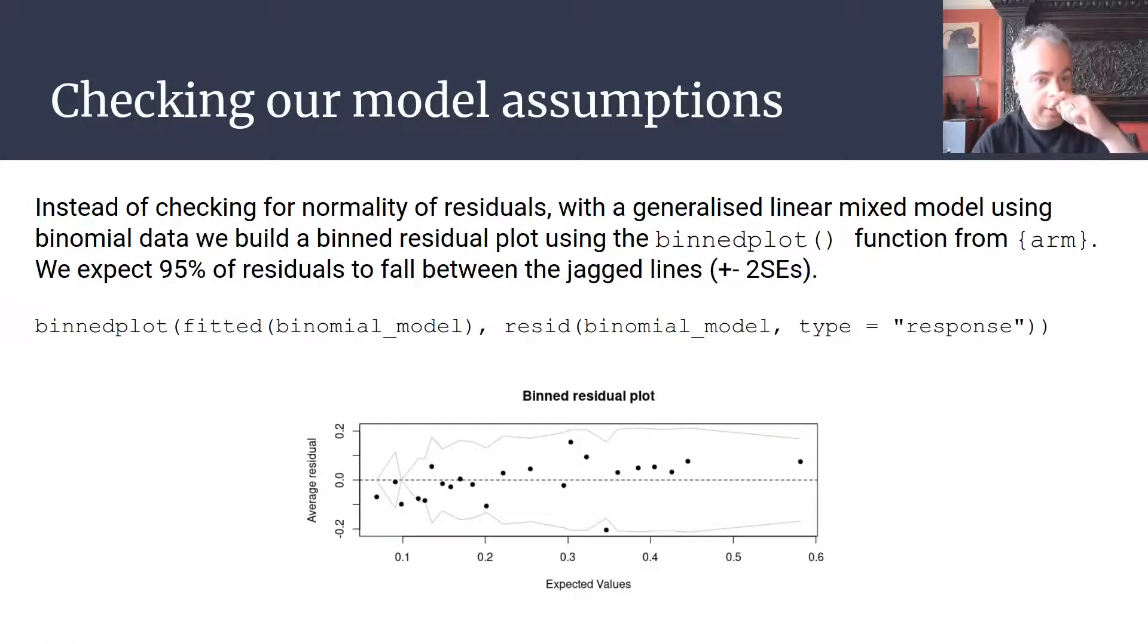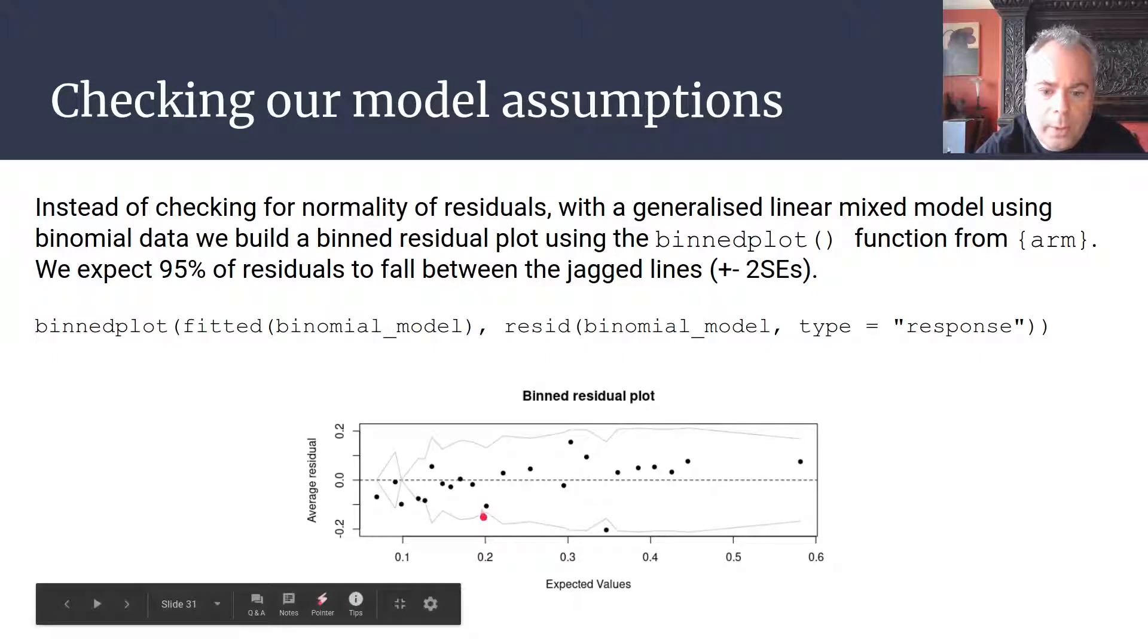When we built our linear mixed models, we needed to check some of our model assumptions, primarily to do with the normality of our residuals. With these binomial models, we don't actually need to check for normality of residuals, but we do need to construct what's known as a binned residual plot, where we'd expect to find about 95 percent of our residuals to fall between the two jagged lines.